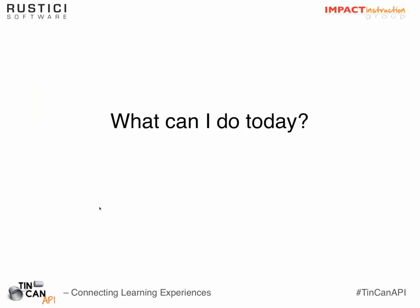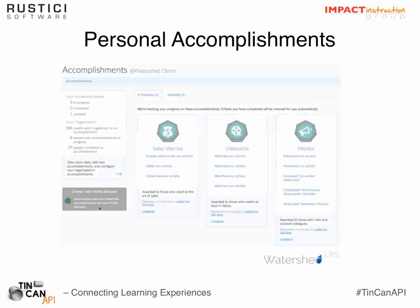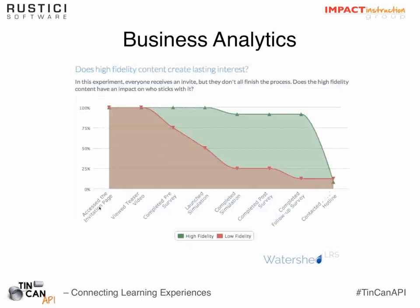Let me shift gears and talk about what we can do today and some interesting case studies of what organizations are using this for right now. A lot of people are using Tin Can to track accomplishments or badges — we can define a badge or accomplishment and then have many different ways to earn them. There's a lot of interesting work being done around defining accomplishments and letting people earn them in a variety of different ways.